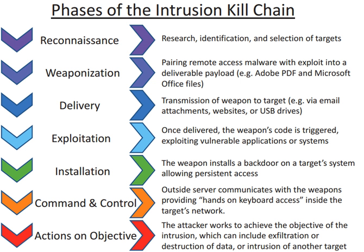An attack can be active or passive. An active attack attempts to alter system resources or affect their operation. A passive attack attempts to learn or make use of information from the system but does not affect system resources — e.g., wiretapping. An attack can be perpetrated by an insider or from outside the organization. An inside attack is initiated by an entity inside the security perimeter. An outside attack is initiated from outside the perimeter by an unauthorized or illegitimate user of the system.